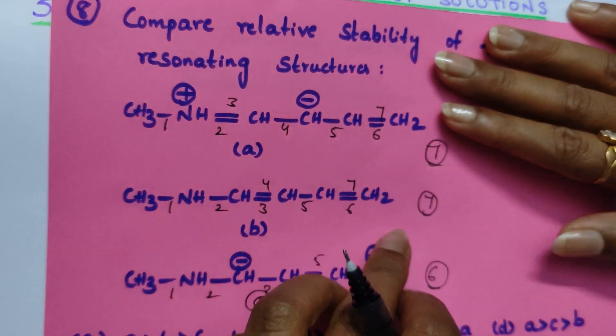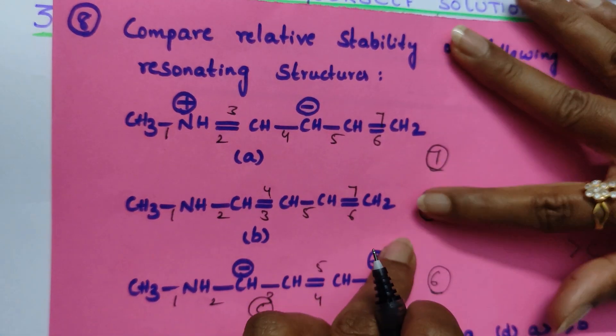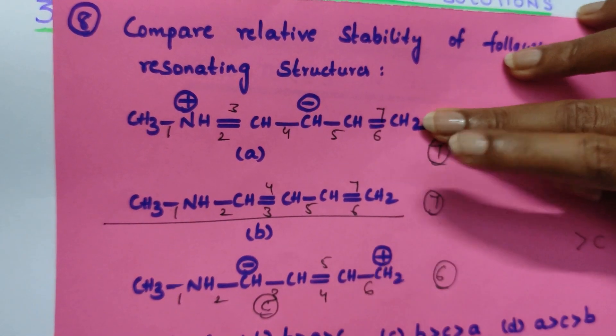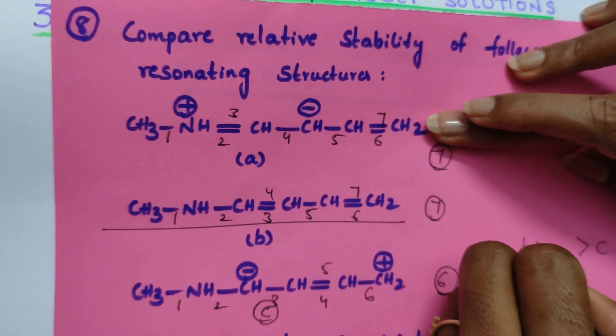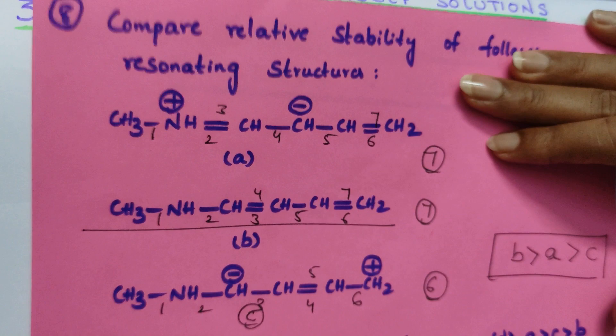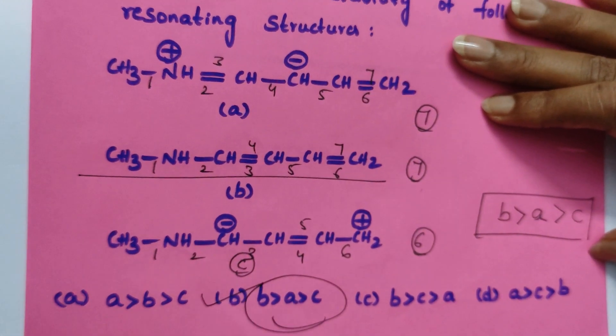In these two, which is both are having same, then you should see which is neutral. This is neutral, not having any charge on it. So B is first priority. A is second priority. Then C is the next one. B, A, C is the correct answer, option B.